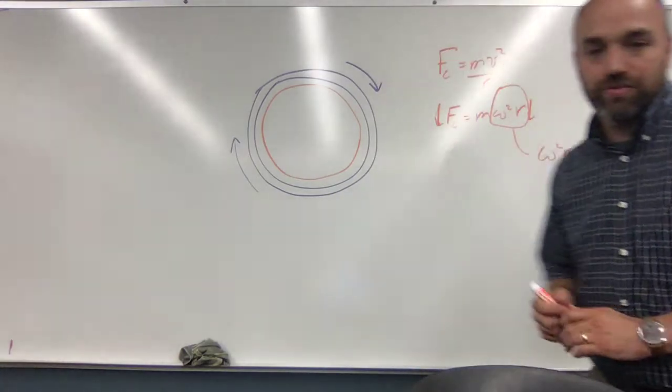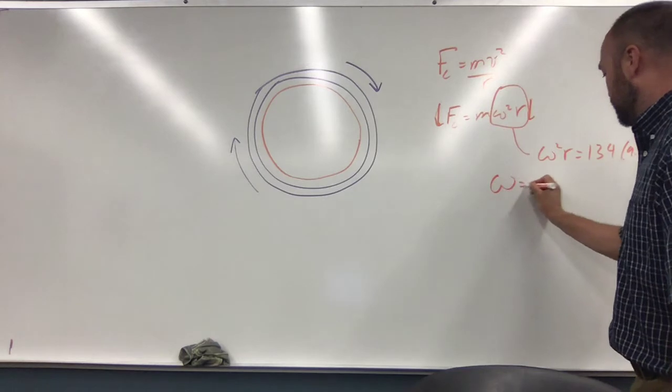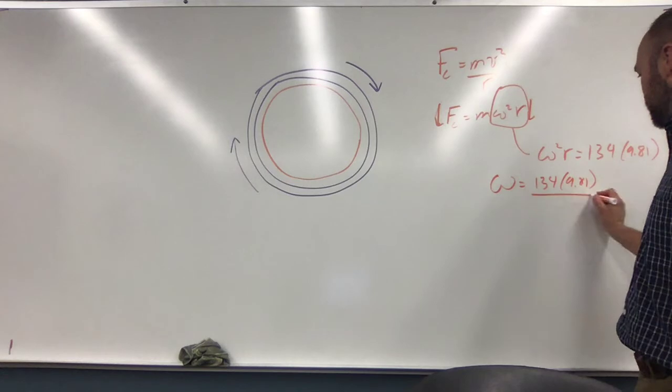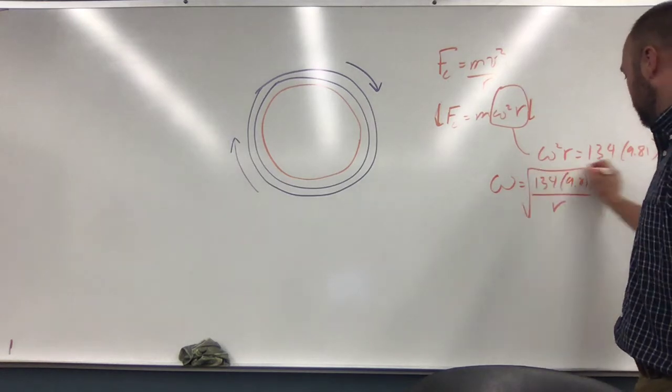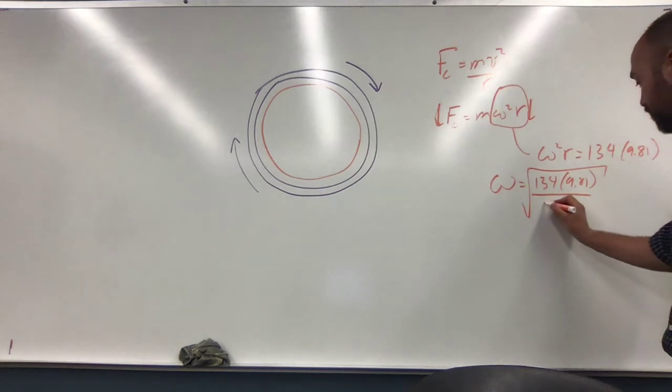Which is 2.45. So, you'd say omega is equal to 134 times 9.81 divided by r, take square root, and your r for your number should be 2.45.